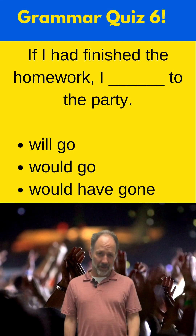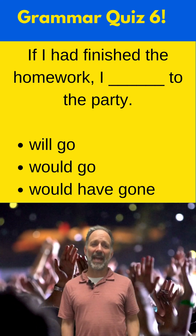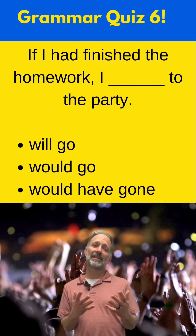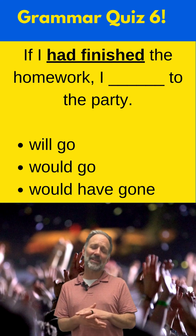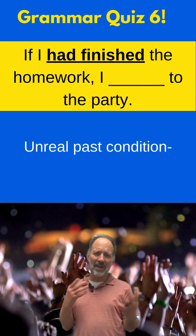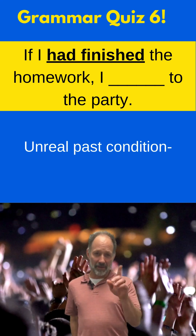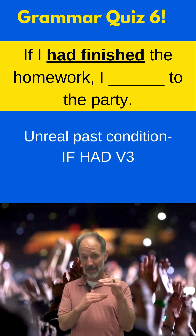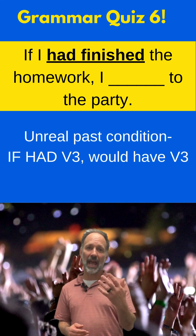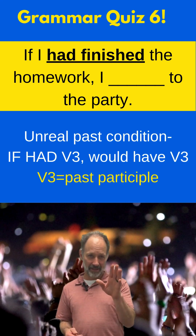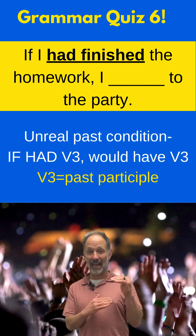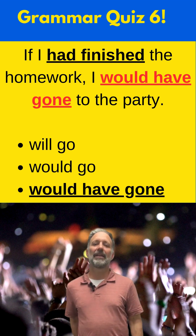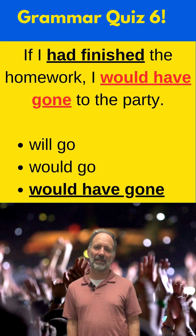Fill in the blank with the correct verb form for this conditional sentence: If I had finished the homework, I blank to the party. I see 'had finished' in the first part, which tells me this is a past conditional — an unreal situation; this didn't happen. The pattern for past conditionals is if plus past perfect (had plus V3), then would have plus V3. So the answer is: if I had finished the homework, I would have gone to the party.